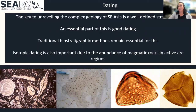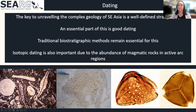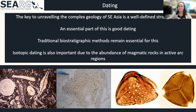One of the biggest challenges around Southeast Asia is to try and define a good stratigraphy. Unfortunately, there's a lot of debate over the different formations — in Sumatra, for example, we see over 20 different names for one individual formation. One of the most essential things we do to unravel the stratigraphy is to have a really good dating campaign. Traditional biostratigraphic methods are incredibly essential for defining our dating and stratigraphy. However, we also find that isotopic dating is really important, because we have so many magmatic rocks around and a lot of active arc settings — so we get some really good answers out of our isotopes.